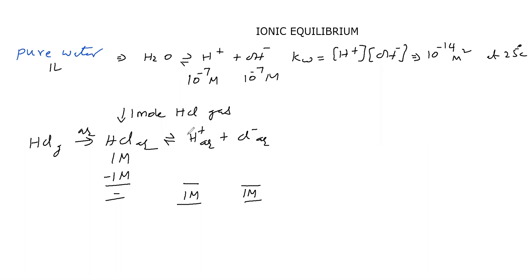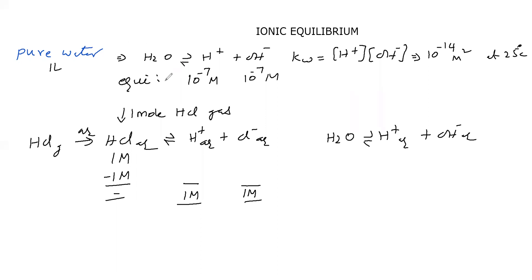In the aqueous solution, another equilibrium exists: H₂O gives H⁺ aqueous and OH⁻ aqueous. In pure water at 25 degrees Celsius, H⁺ concentration at equilibrium is 10 to the power of minus 7 molar. Due to addition of HCl, HCl has contributed 1 molar, therefore H⁺ concentration is now 1 plus 10 to the power of minus 7 molar. OH⁻ concentration is 10 to the power of minus 7 molar and Cl⁻ is 1 molar.